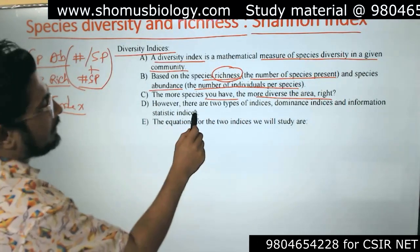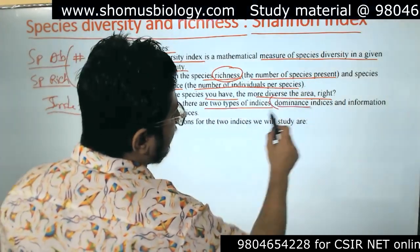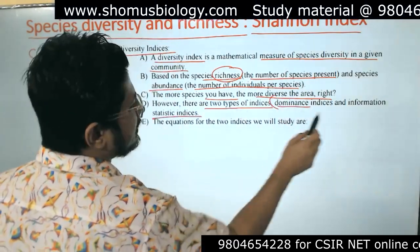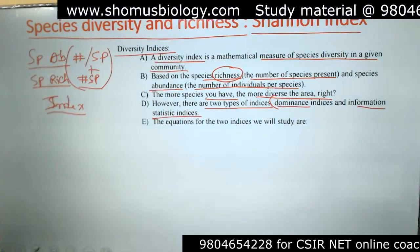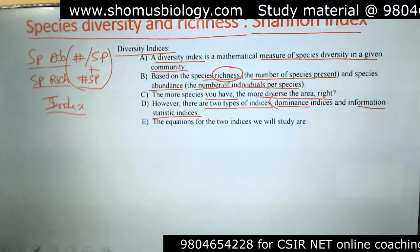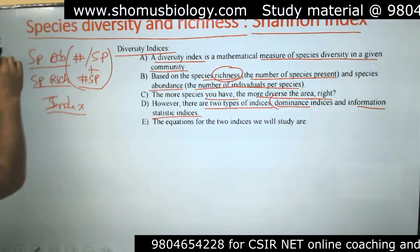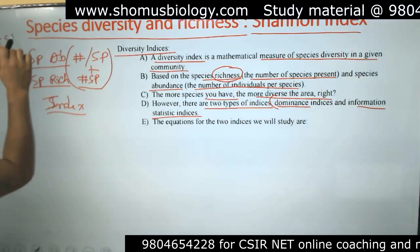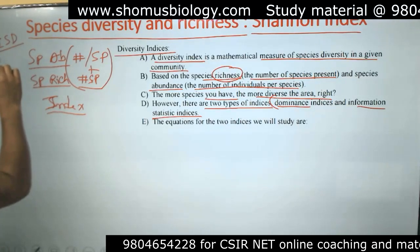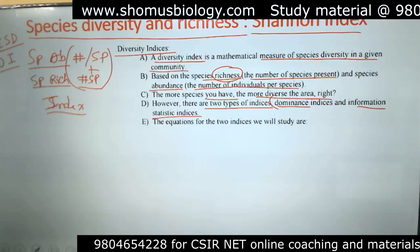There are two types of diversity index: the information statistics index and the index of dominance. The first is the information-based index, and the second is the dominance index.